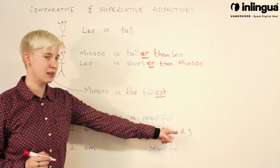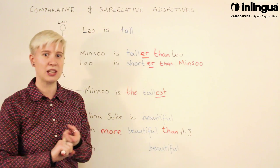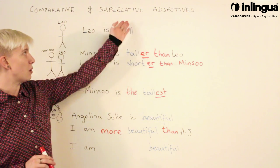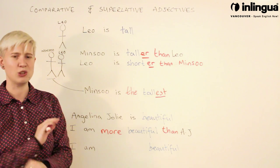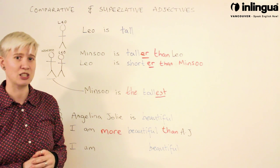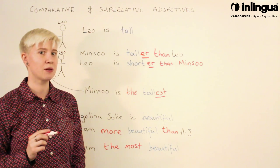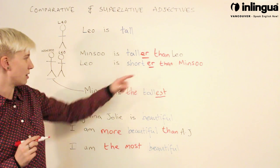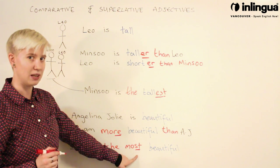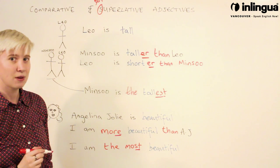I am more beautiful than Angelina Jolie. 'Than' always connects to the second object in your sentence — the second person, the second item. What about if I want to use a superlative? I am the winner — I am number one. I want to compare myself to everyone in the world, so I'm going to use a superlative adjective. I am the most beautiful. We need 'the' for a superlative, and we need 'most' instead of 'est' for a longer superlative adjective.